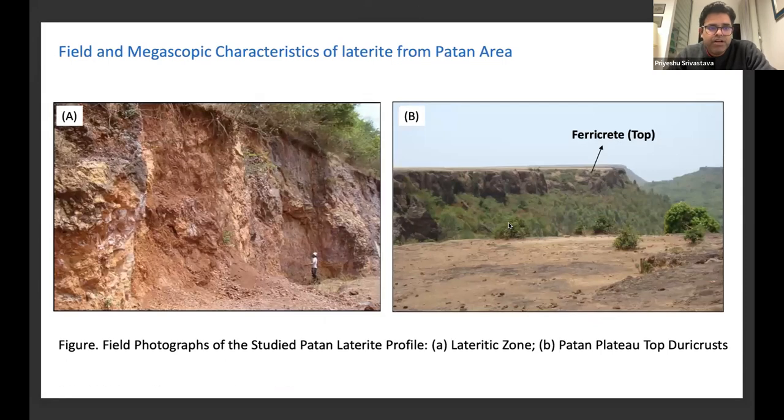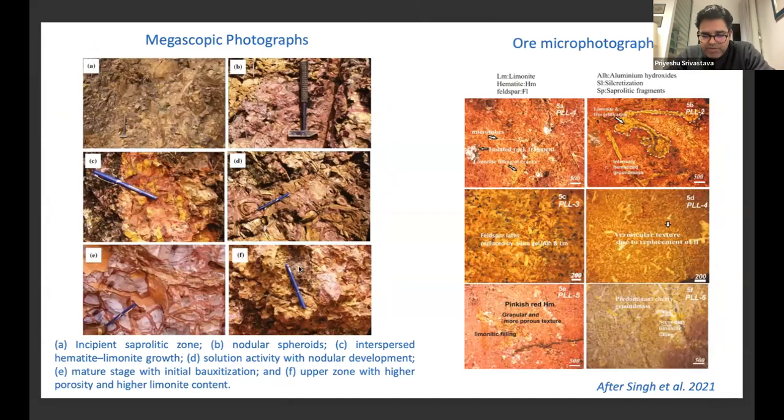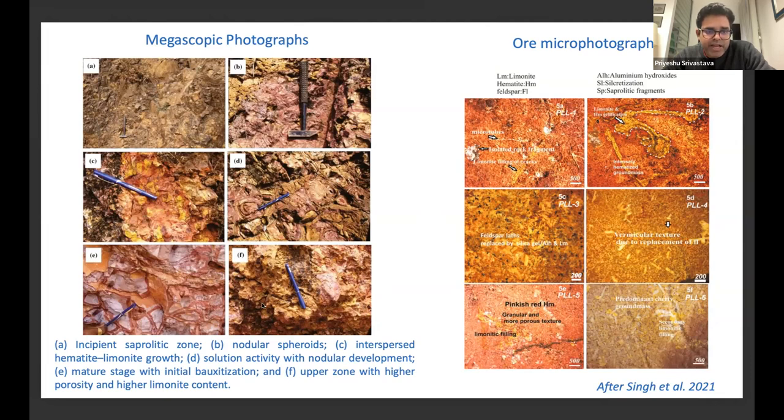This is a field photograph of the section we studied. This is the top relief of the ferricrete, and this is one of the road cutting sections exposed in the Patan area. Patan is in the Bomnoli range, which is very famous for the ferricrete tops of the basalt. Megascopic features, we can see there are different features such as nodular spheroids. And then at the top, we have more and more porous limonitic nature. In this part, we can also see a little bit of bauxitization being formed.